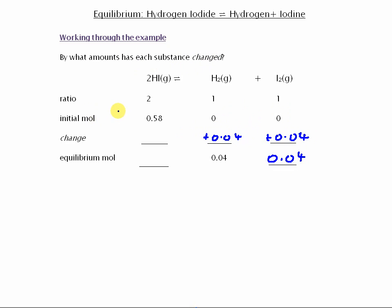For the hydrogen iodide, because these are in a 2 to 1 ratio, the amount by which the hydrogen iodide has changed must have gone down by 0.08 to form the hydrogen and the iodine. So there we've worked out the equilibrium mole amounts of all three substances.